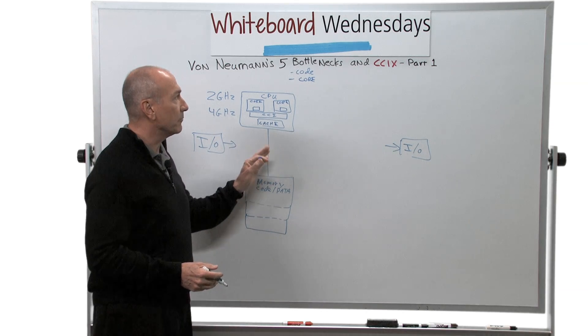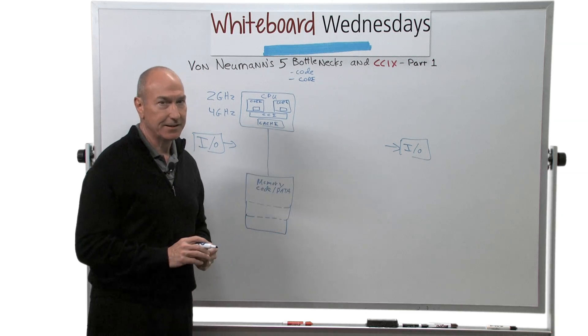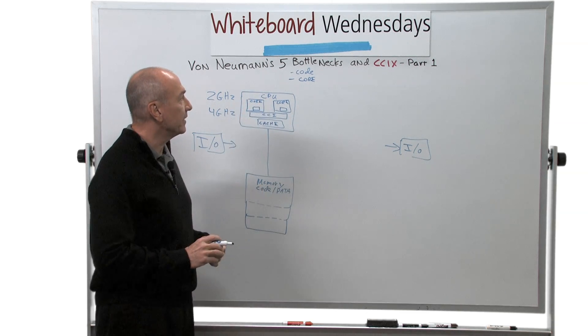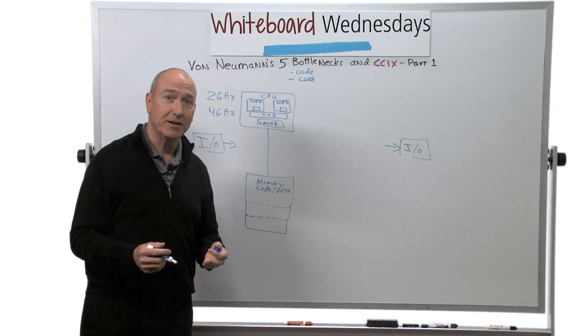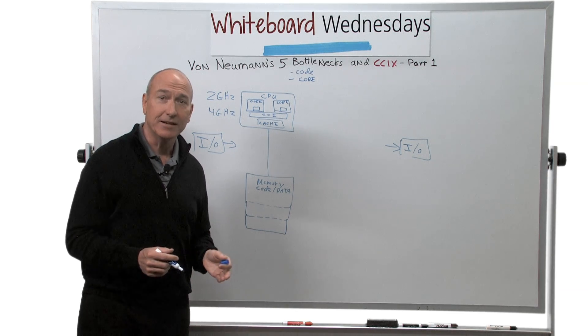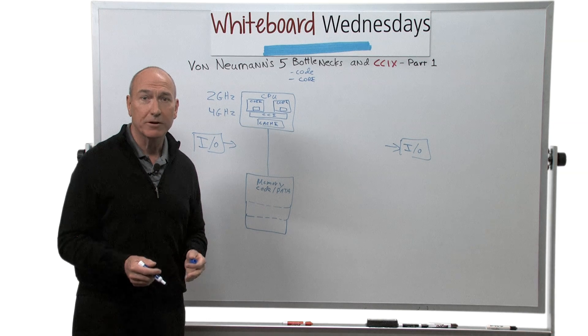And this gets us part of the way along, but we haven't talked about C6 yet. And in fact, we have three more bottlenecks to go. So we're going to cover those in the next installment of this video. And until then, I'm Tom Hackett for Whiteboard Wednesday.